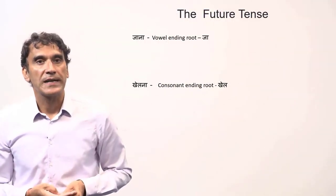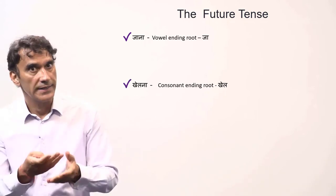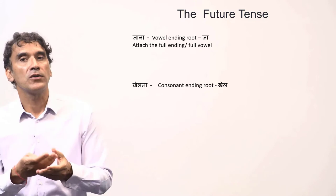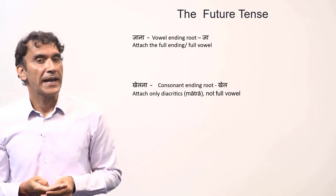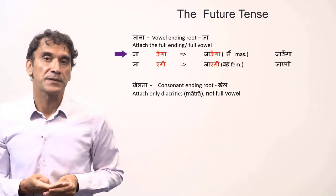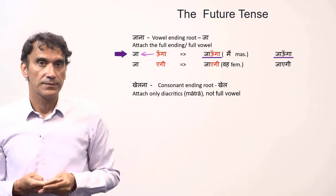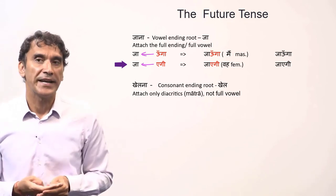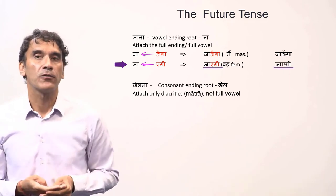We are taking two different types of verbs: a verb with a vowel-ending root ('jana') and a verb with a consonant-ending root ('khelna'). With the vowel-ending root you write the full vowel, and with the consonant-ending root you add the diacritics — the matra. We have seen this ending-adding behavior in imperatives too. For the vowel-ending root, if you add the ending 'unga' (first person masculine) you simply attach the ending to the root to make 'jaunga.' Similarly, for the third person feminine you attach 'aegi' to the root 'ja' to make 'jaegi.' This pattern follows with all other subject pronouns.